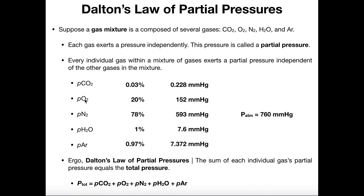The next most plentiful gas is oxygen, occupying 20% of the atmospheric gas. Being 20%, it would be expected to have a lower partial pressure than nitrogen, and in fact our pO2 in the atmosphere is about 152 millimeters of mercury. Depending on where you are, you can have about 1% water vapor, equaling about 7.6 millimeters of mercury. We have a little less argon, which is an inert gas that doesn't do anything just like nitrogen, at about 7.372 millimeters of mercury.